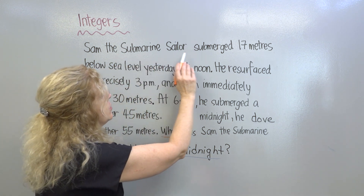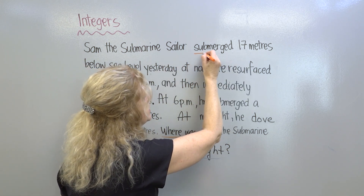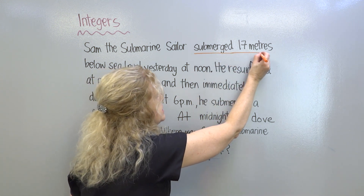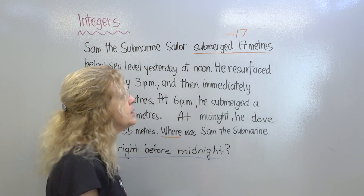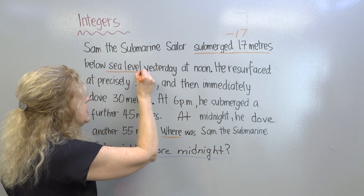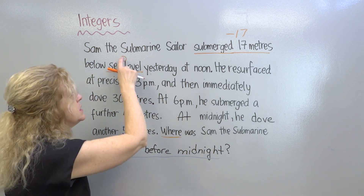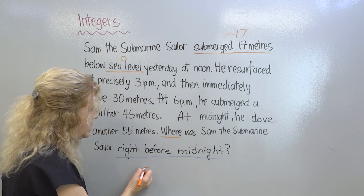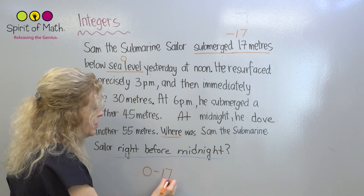So let's find out where he was. Submarine Sam submerged 17 meters — submerged means the submarine went down, and 17 meters is the distance. So down 17 would be minus 17. It says below sea level, and sea level is considered to be zero. So you have zero, and you have minus 17. Notice this doesn't have a plus zero or anything — it's just zero. That's where you're going to start. So I'm going to start the equation with zero minus 17, because he's submerged 17.